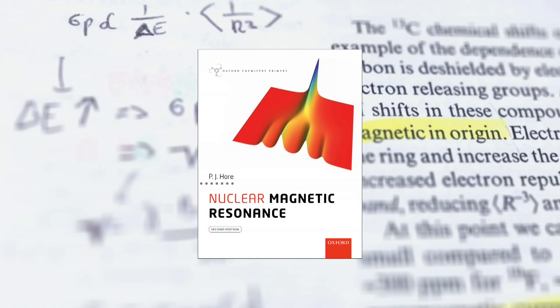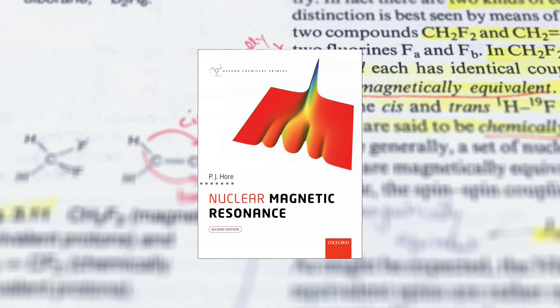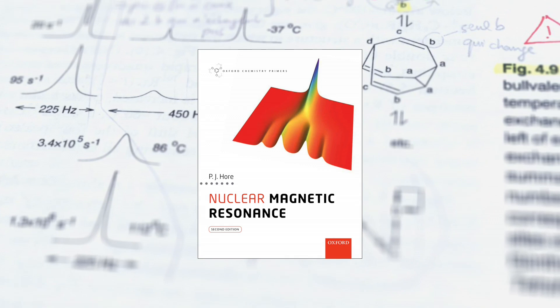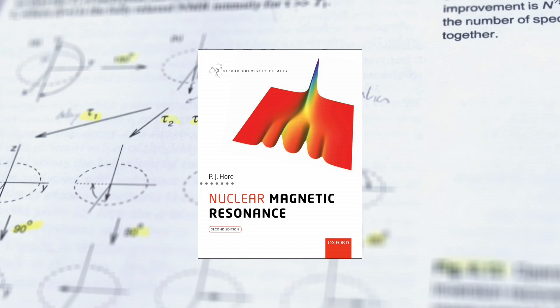This MOOC is based upon the second edition of Nuclear Magnetic Resonance, a little book written by Peter Hoare at Oxford University. In the video lectures, I will be covering the same range of subjects as Peter has in his book, following the same structure divided into six chapters. I strongly recommend that you get a copy of Peter Hoare's book, as it goes into much greater detail than I am able to do in this MOOC.